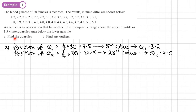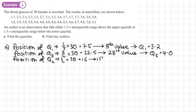We should also find Q2, the median. Half of 30 is 15, so the median lies between the 15th and 16th values. Since we have 15 numbers on each row, it's between 3.8 and 3.8, so the median is 3.8.